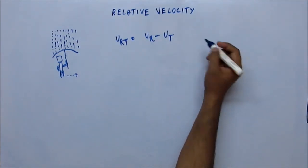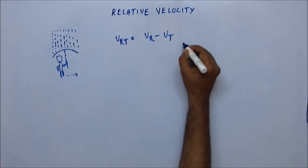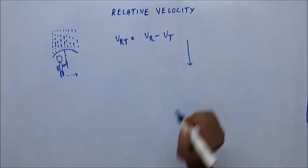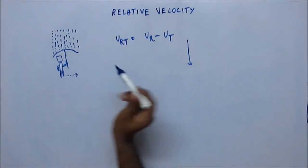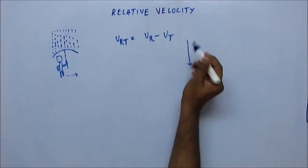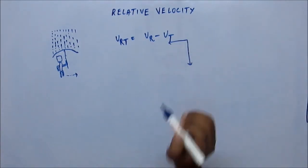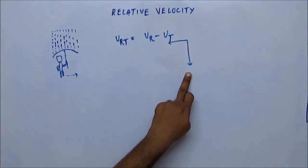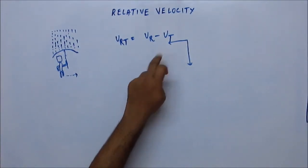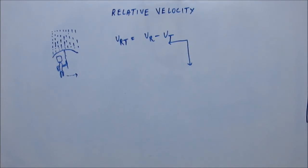The velocity of rain is vertically downward — this is the velocity vector of rain. The velocity of Tom is in the horizontal direction, say to the right. So minus the velocity of Tom points to the left. The summation of these two vectors gives us the velocity of rain with respect to Tom.